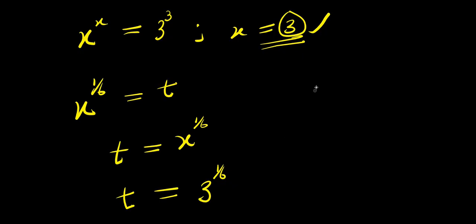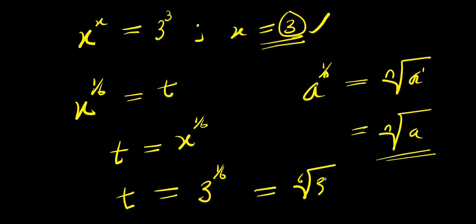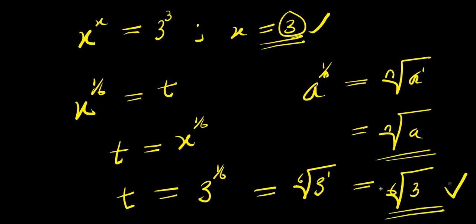Now if you have a to the power of one over n, this equals the nth root of a to the power of one, which is also just the nth root of a. So this will give us the sixth root of three to the power of one, which equals the sixth root of three. This is our value for t.